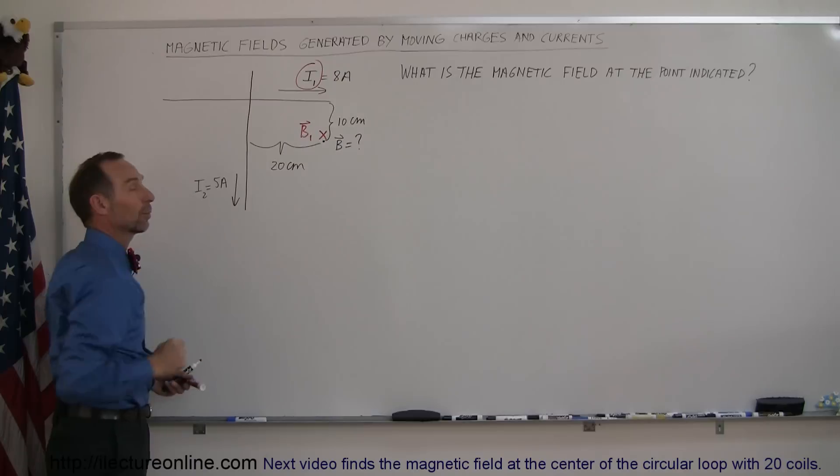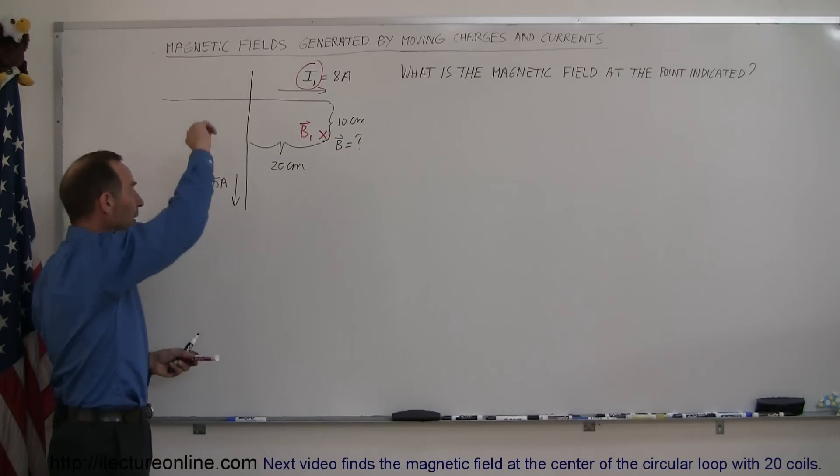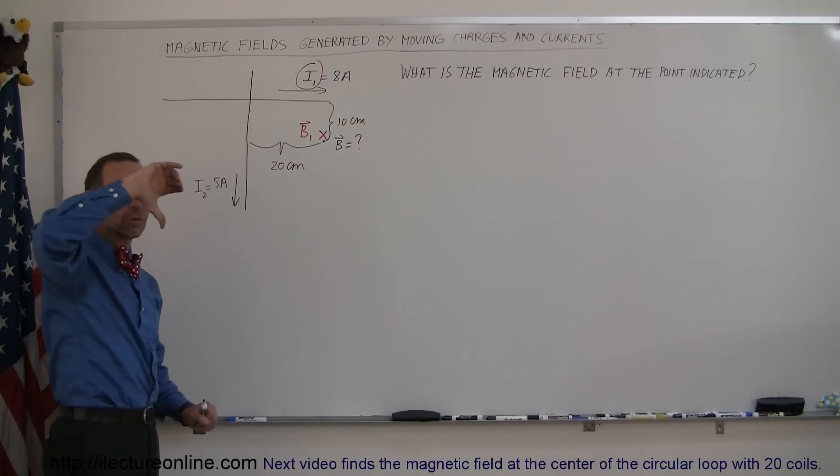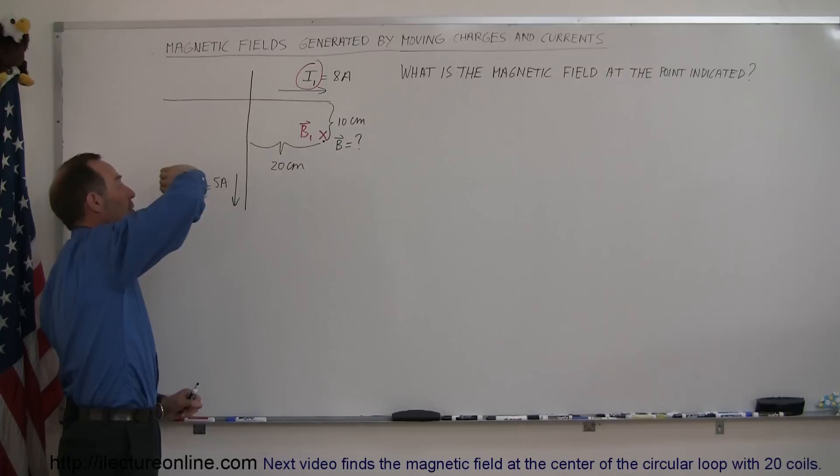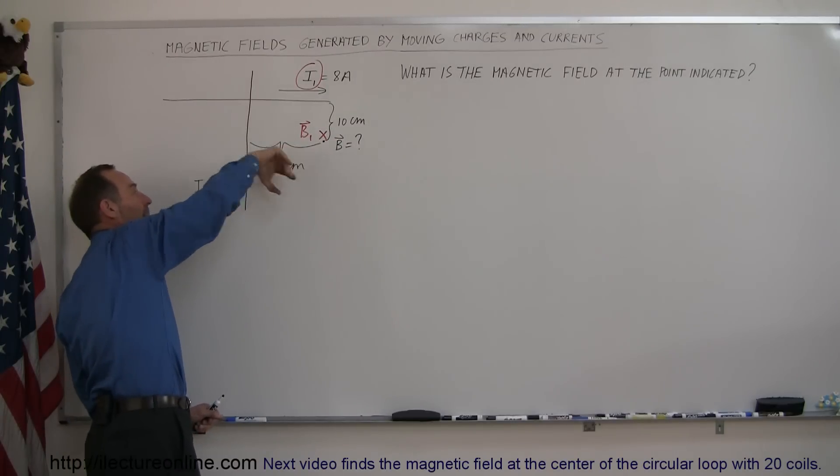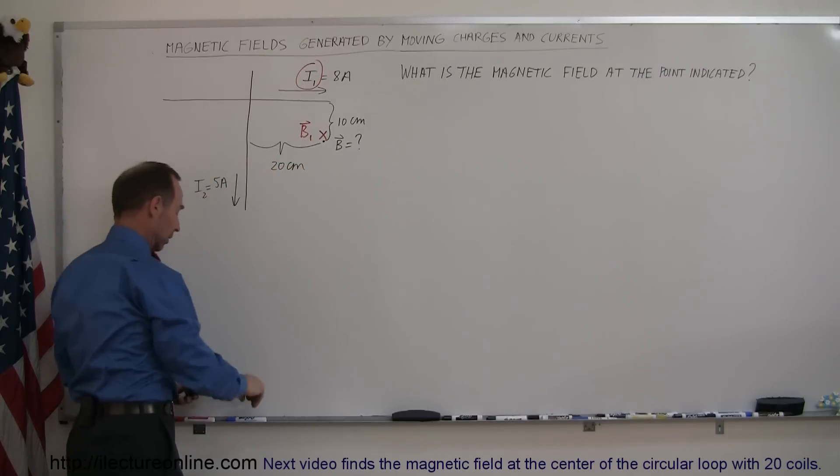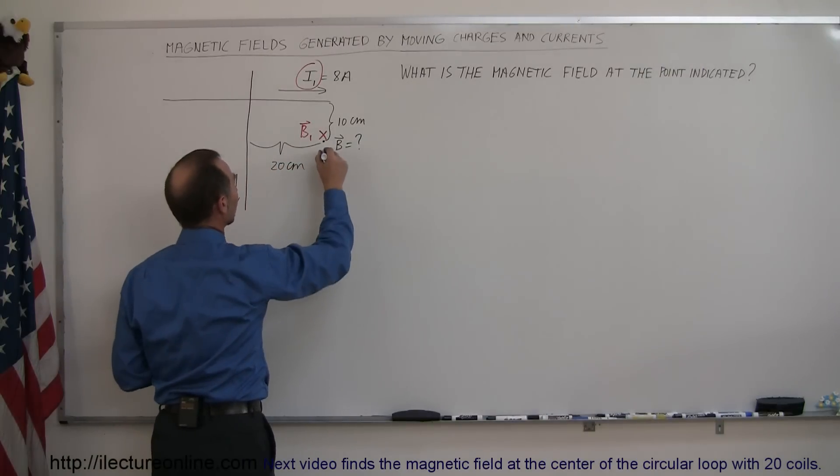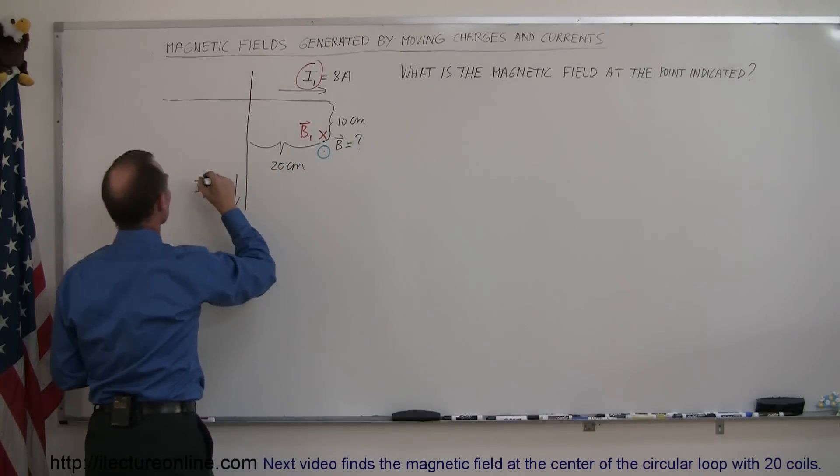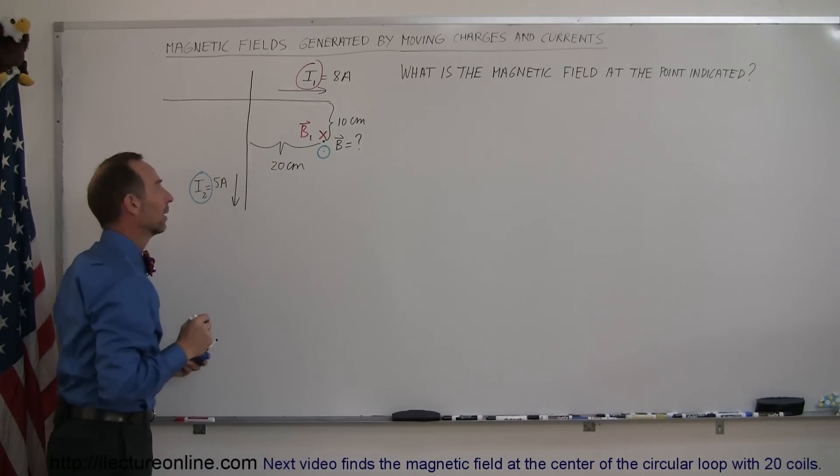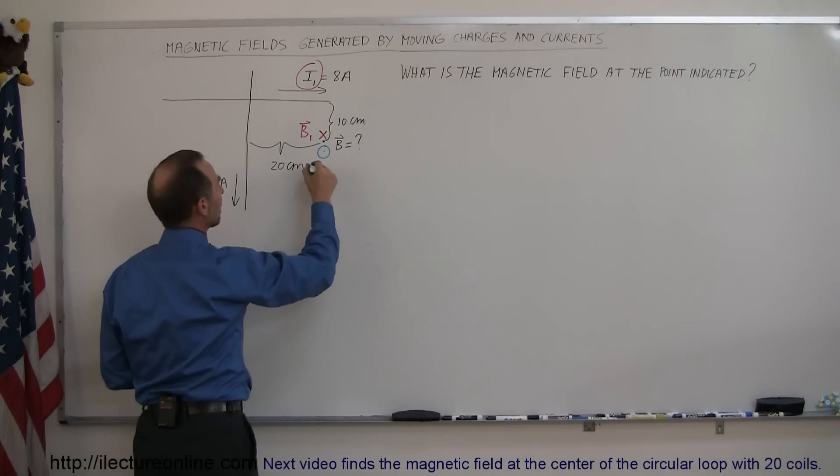Now, going to this wire right here, current is in this direction. Point your thumb in the direction of the current, your fingers will curl in the direction of the magnetic field. Notice that to the right of this wire right here, the magnetic field will be coming out of the board. So we can indicate that with a point right there, and that would be relative to this wire right there. And so that would be B2.